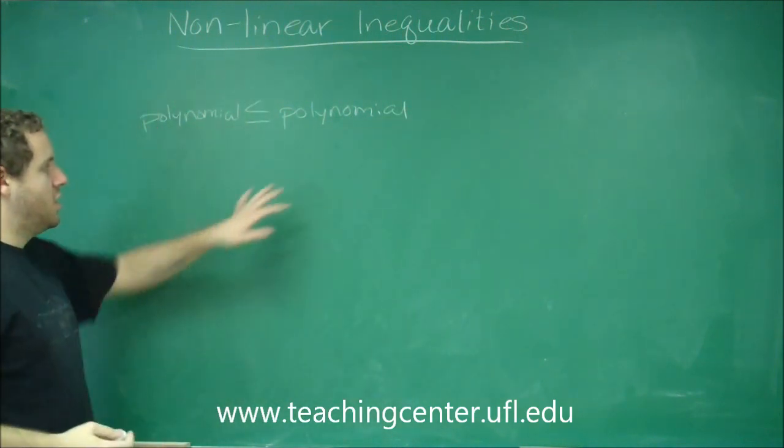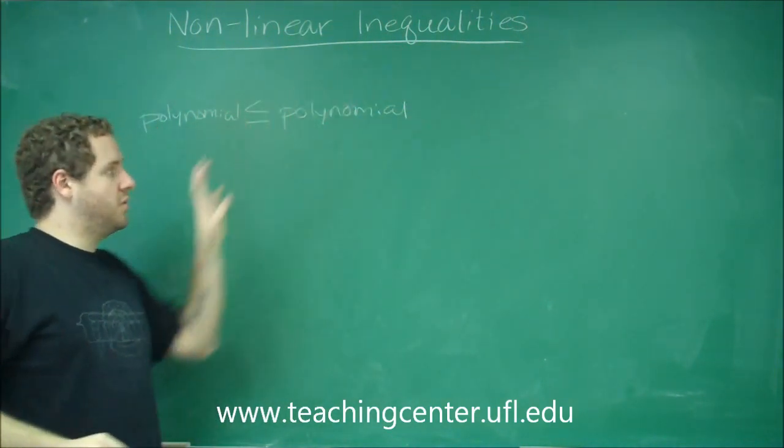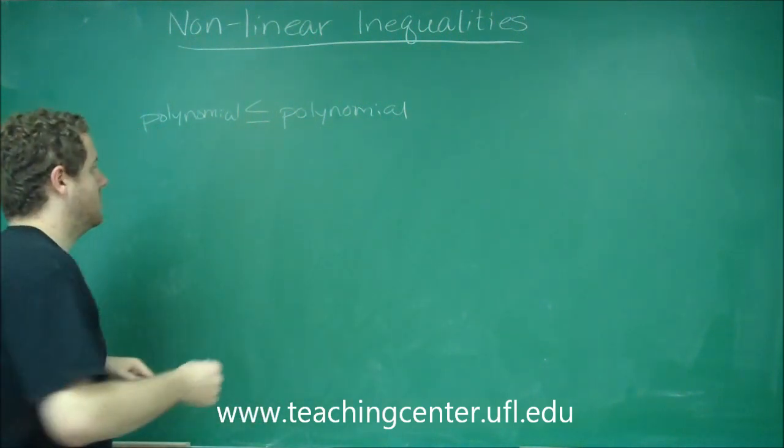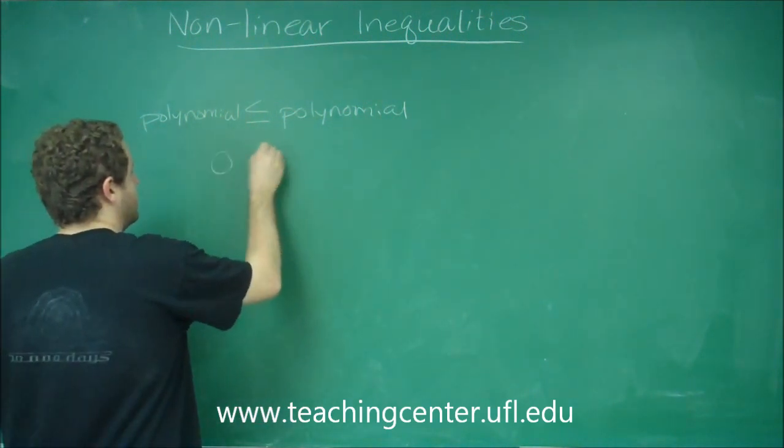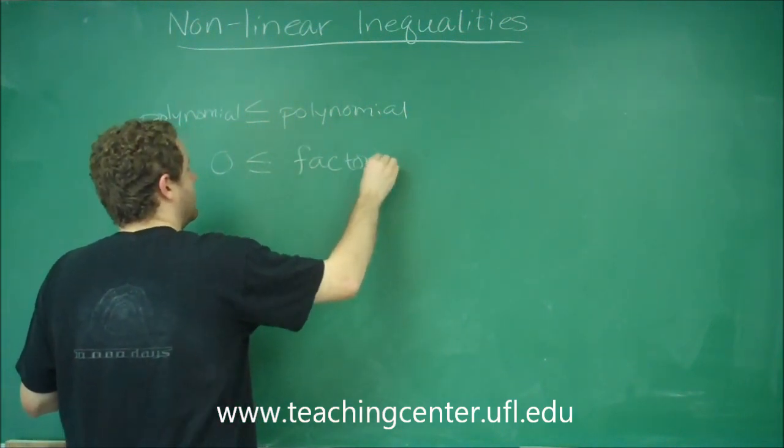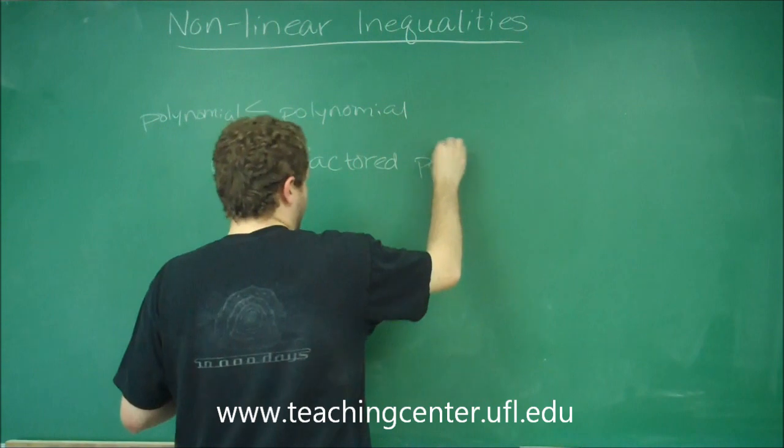let's say less than or equal to, you want to subtract all the terms from one side to the other to make it all equal to zero. The next thing is always get zero on one side and then factor the polynomial.